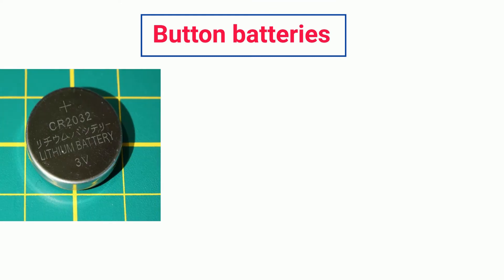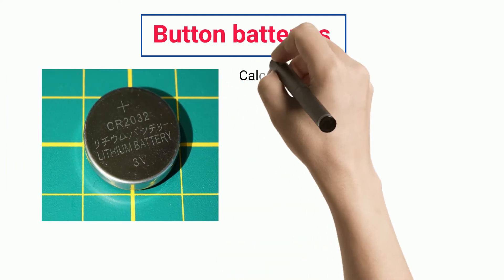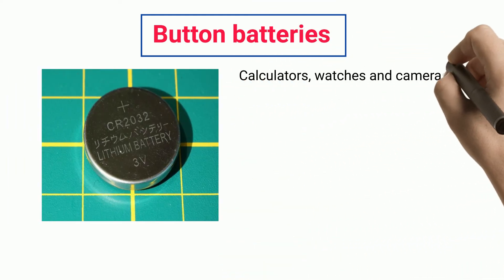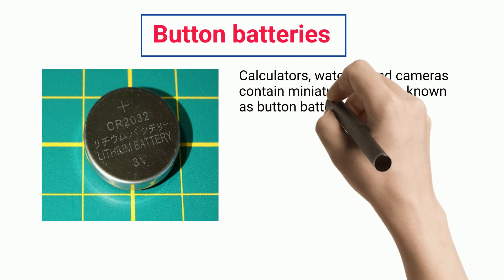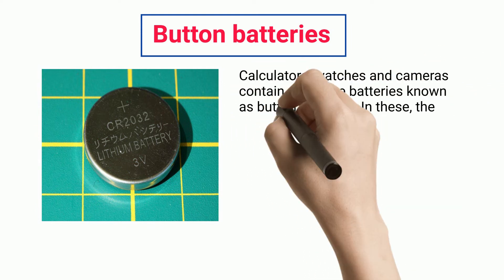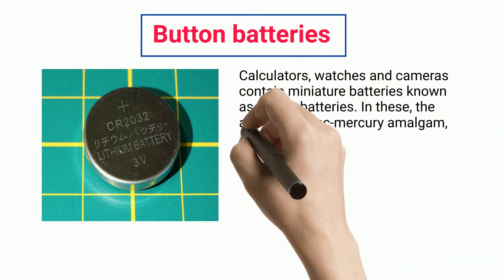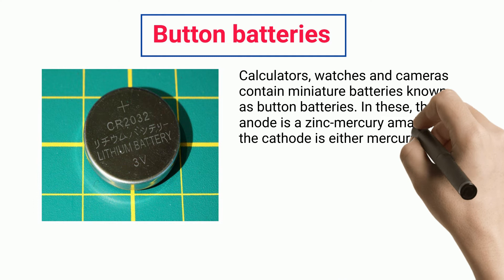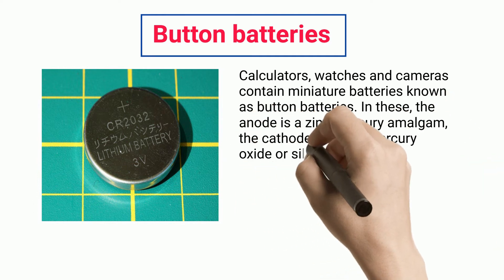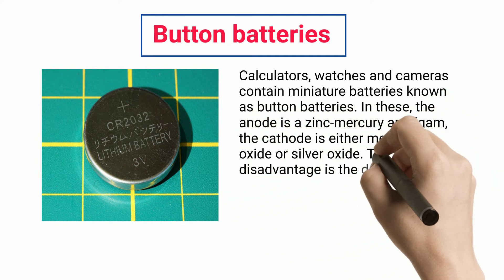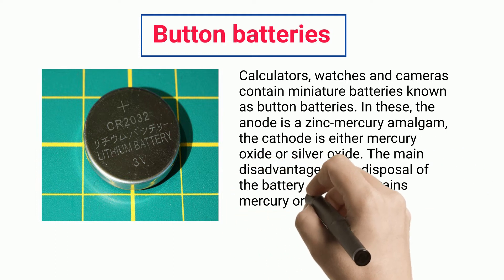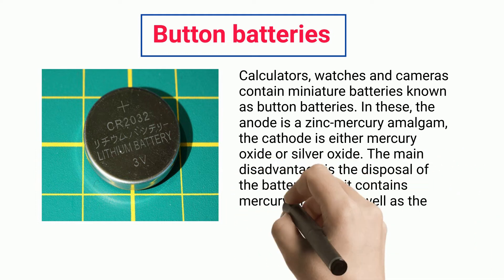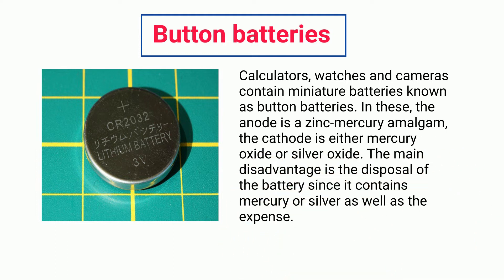Calculators, watches, and cameras contain miniature batteries known as button batteries. In these, the anode is a zinc mercury amalgam and the cathode is either mercury oxide or silver oxide. The main disadvantage is the disposal of the battery since it contains mercury or silver, as well as the expense.